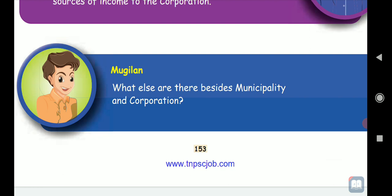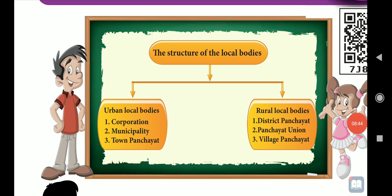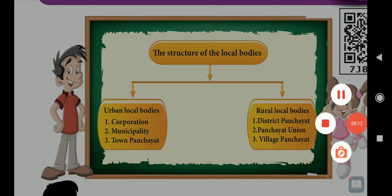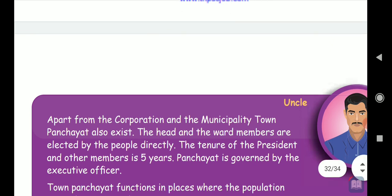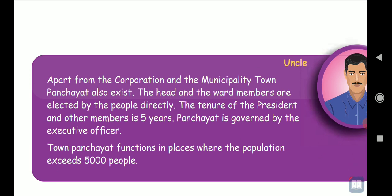Mughilan asked the next question: what else is there beside municipality and corporation? In the urban local bodies, the structure of the local body is divided into urban local bodies and rural local bodies. We are learning about the urban local bodies. Already we have learned corporation and municipality. The remaining is town panchayat.